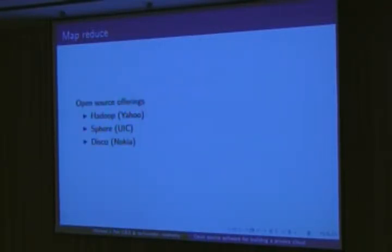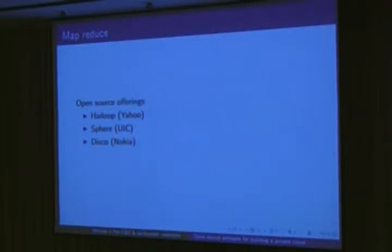Open source offerings — these are really the three main ones. I think everyone here knows Hadoop. UIC produces Sphere, which complements their file system that I mentioned earlier. Nokia produces Disco, which complements their file system that I mentioned earlier.